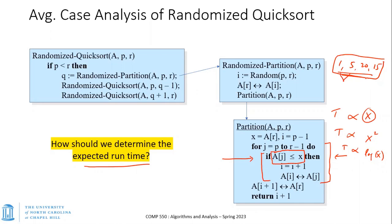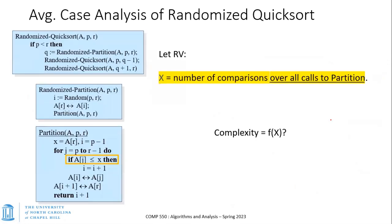So basically: the complexity of quicksort equals the expected value of X, where X is the number of comparisons over all calls to the partition function. X is a random variable, and we need its expected value. For those confused by this, the book discusses it in more detail — find the relevant section when you need clarification.